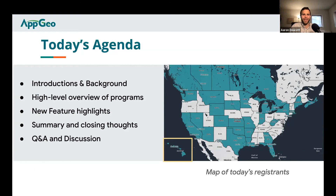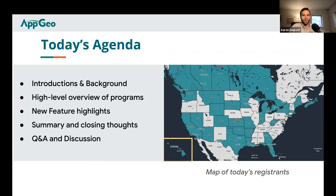We truly have a great audience today, a great representation from coast to coast and plenty of Canadians as well. The agenda covers introductions and background, a high-level overview of programs in both Texas and Nevada, then our experts will discuss in more detail how all this works, some new features, and finally we'll summarize and open up for discussion. You're going to hear about financial incentives and how new features are allowing more user engagement and more self-service.